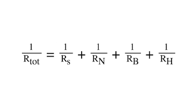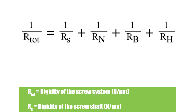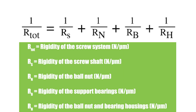Shown here is the equation for the total rigidity of a ball screw assembly. Notice that total rigidity depends not only on the screw shaft and the ball nut, but also on the support bearings and the ball nut and end bearing housings. The rigidity values of the support bearings are given by their manufacturer, while the rigidity of the nut housing and the bearing housings depend on their construction and mounting.